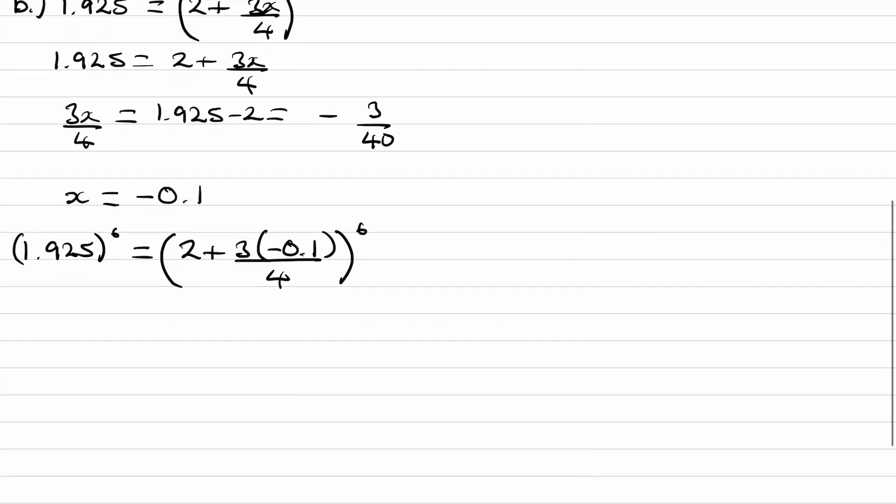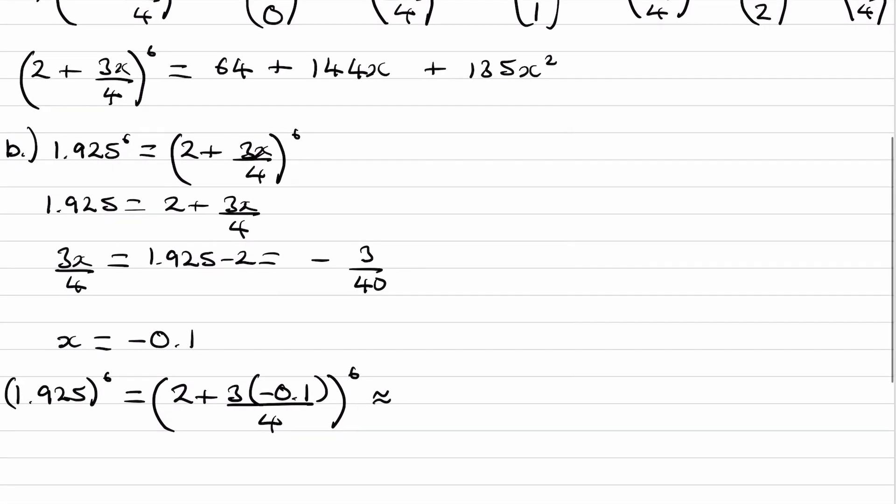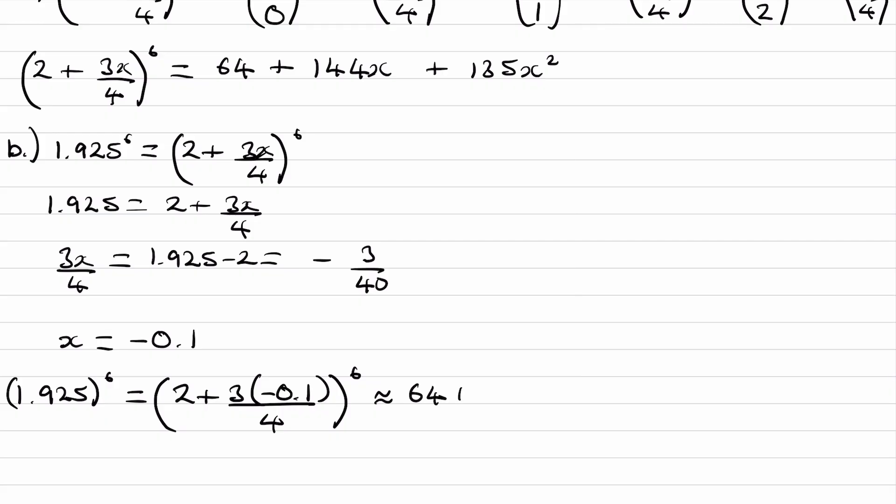Then this will be approximately equal to those first three terms. So 64 plus 144 times x plus 135 times x squared. And actually, if we were to work this out, 1.925 to the power of 6 is approximately equal to 50.95.